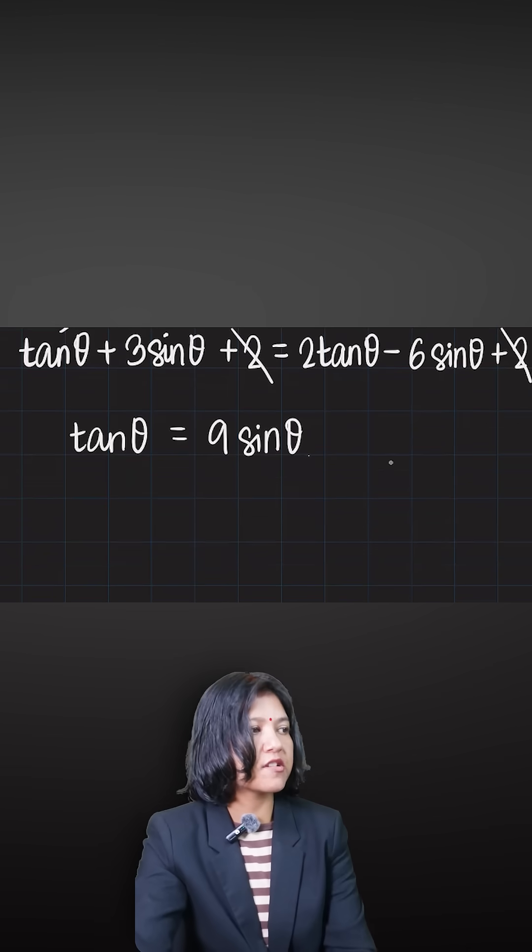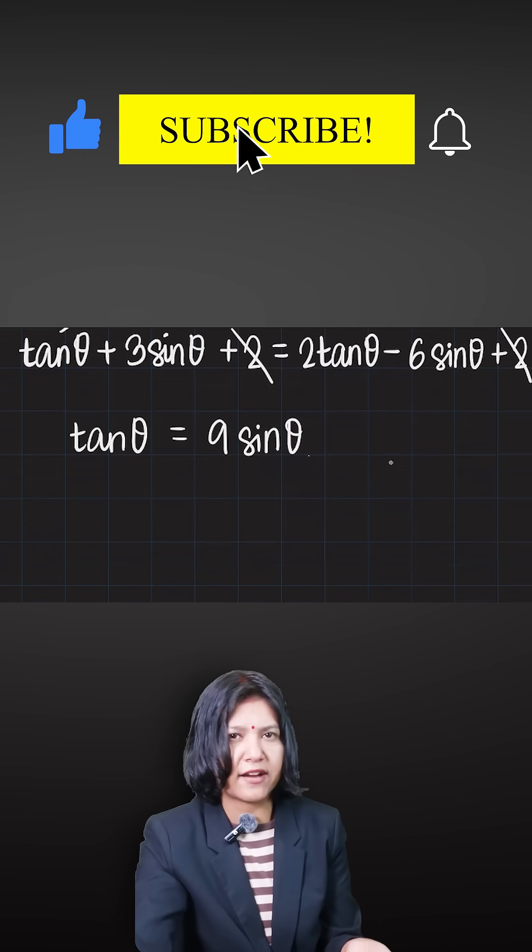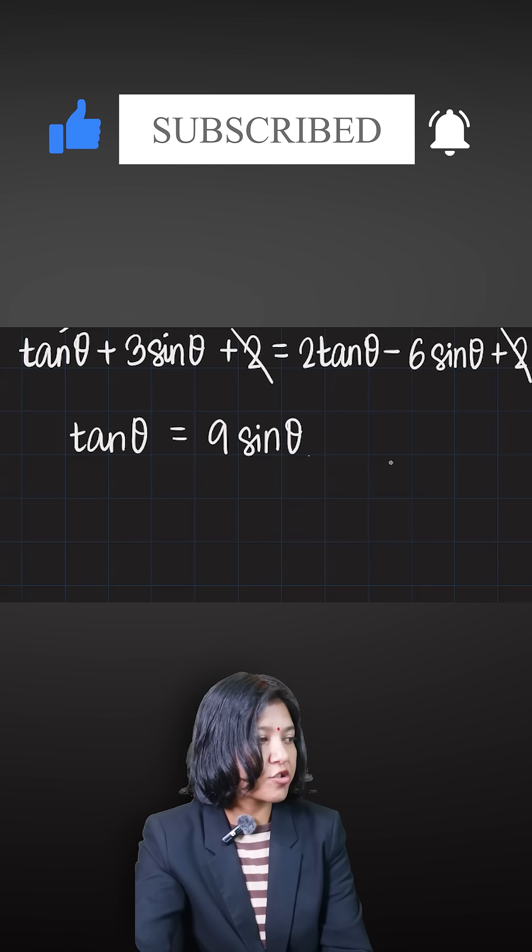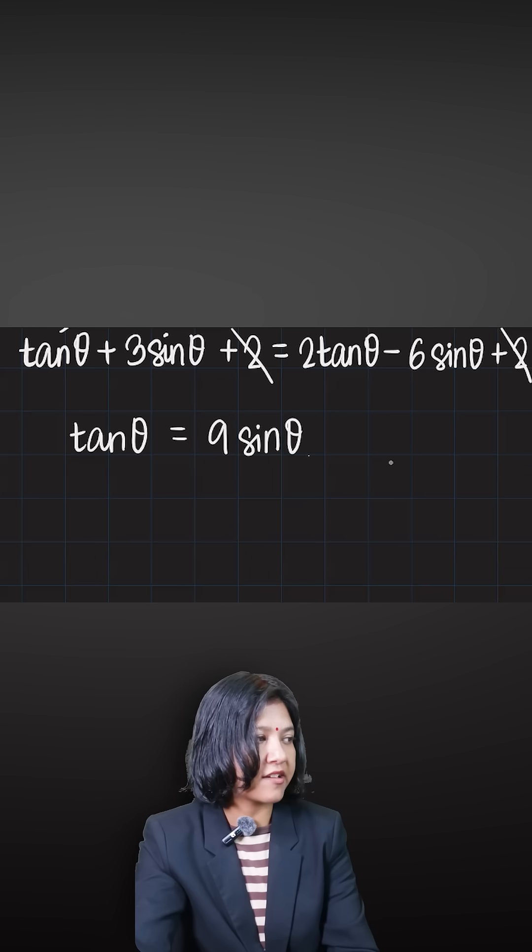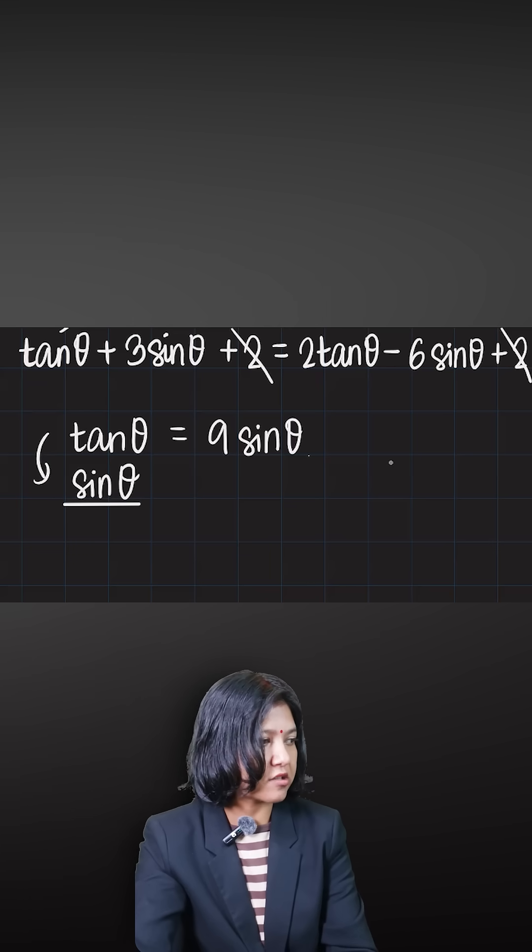Now, because theta is unknown, sin theta is unknown - we're finding the value of the angle. What you do is express tan as the ratio of sin to cos, so tan theta equals sin theta divided by cos theta.